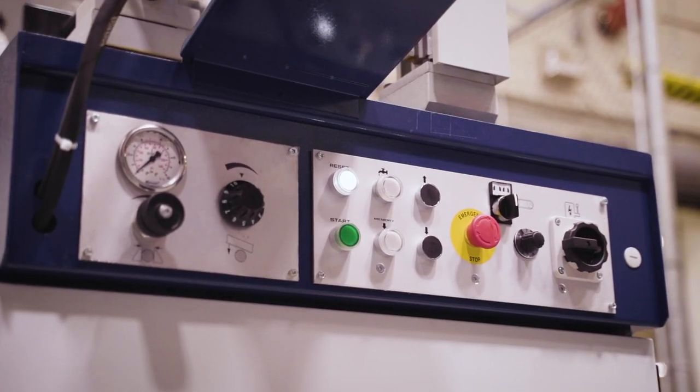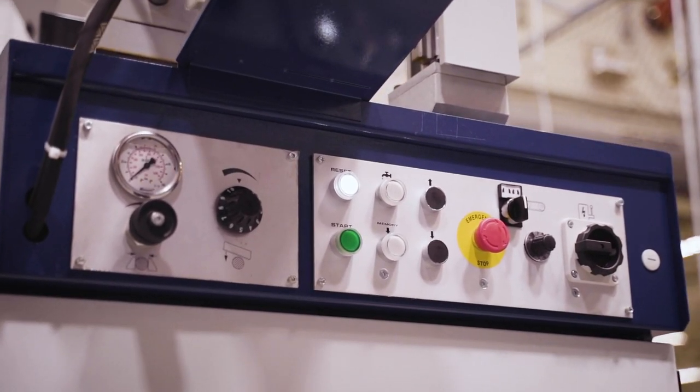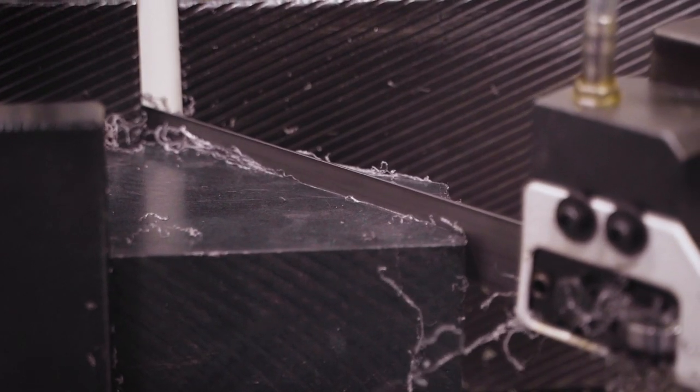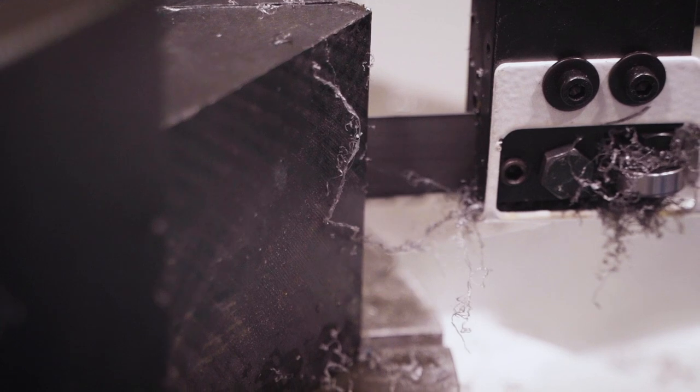To get the perfect cut every time, the saw has a variable speed system to ensure that the blade is run at the proper speed for every cut, based on material type and shape.